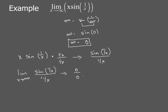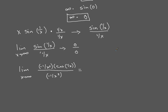What L'Hôpital's Rule says to do is simply take the derivative of the numerator and the derivative of the denominator, and then re-evaluate the limit. When we do that, we'll end up with the limit as x goes to infinity. Be careful to use the chain rule appropriately: the derivative of the numerator gives us negative 1 over x squared times cosine of 1 over x, and the derivative of the denominator, 1 over x, is negative 1 over x squared. These cancel nicely, leaving us with the limit as x goes to infinity of cosine of 1 over x. Plugging in infinity, that gives us cosine of 0, and cosine of 0, from our trig days, is just 1.